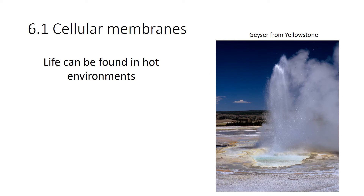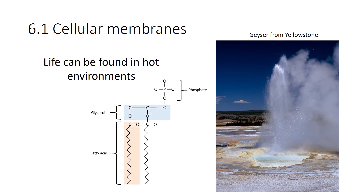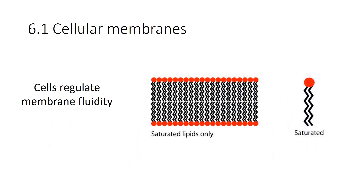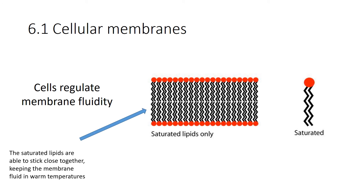Life can also be found in really hot environments — like a geyser from Yellowstone where the water is practically boiling, and yet there are bacteria and archaeans living there. So how do you have a membrane that doesn't become too fluid when it's warm? You make the fatty acids longer and more saturated, and that helps them stick together. As your environment gets warmer and warmer, you make your tails longer and more saturated — that's how you regulate membrane fluidity.